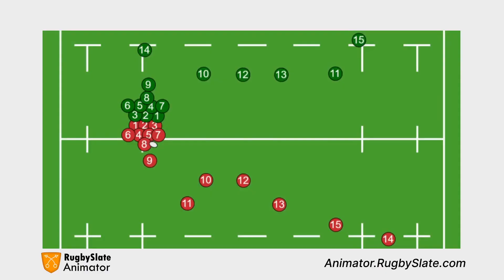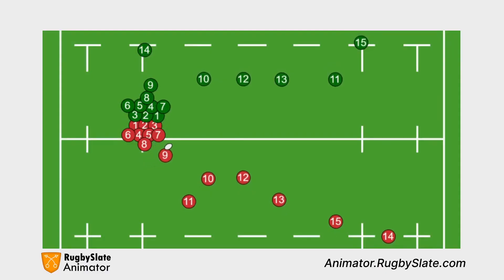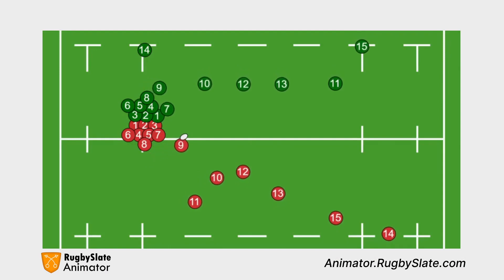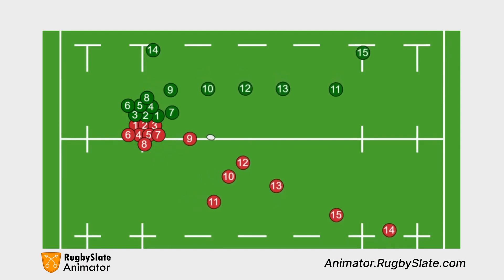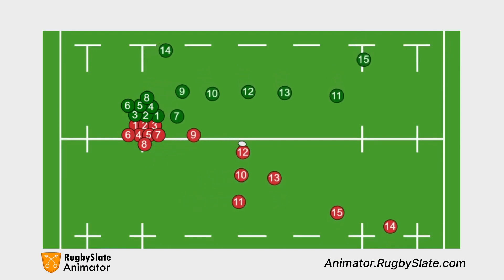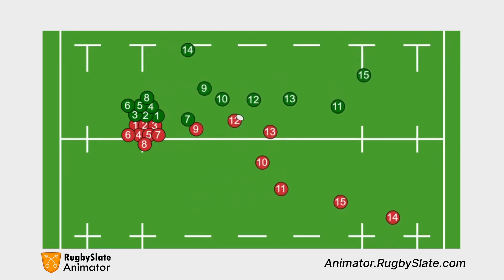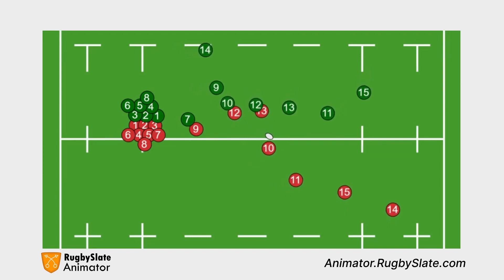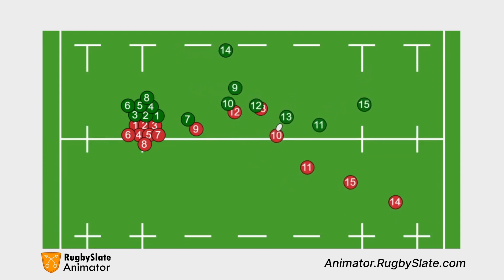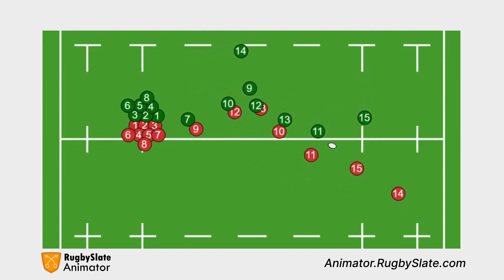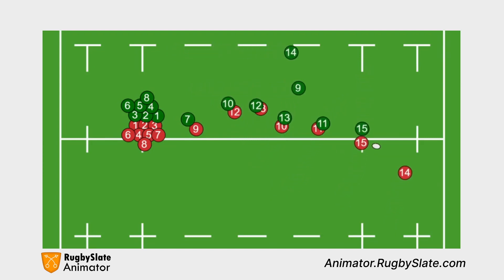For the defence, the 10 and 12 have to take the crashing centres. The 13 takes the looping 10, and in this example the 11 takes the 11, the 15 takes the 15, and this leads to the 14 being 3 out wide.